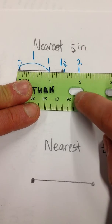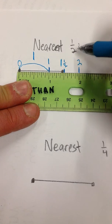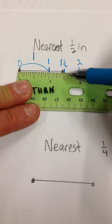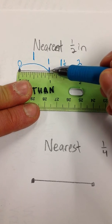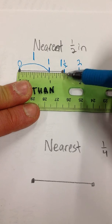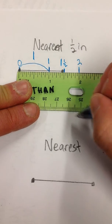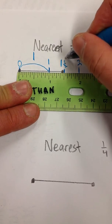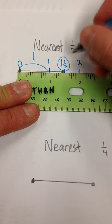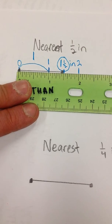That's one and a half. So what is the nearest half inch marker? Is the end point closest to the one? Is it closest to the one and one half? Or is it closest to the two? The answer is one and one half inches. Good job.